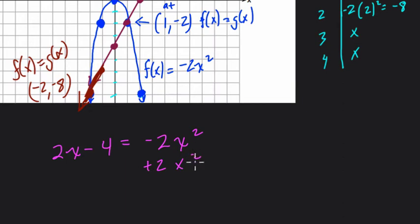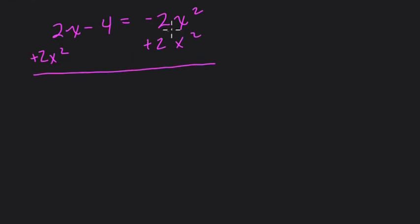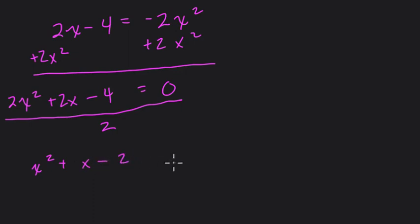So to do that, I would add 2x squared to both sides. I want to get 0 on one side. Usually it's a good strategy when I'm dealing with quadratics or x squared. So we have 0, 2x squared, plus 2x, minus 4. However, I want to divide everything by 2 to simplify this process. And that's x squared plus x minus 2 equals 0.